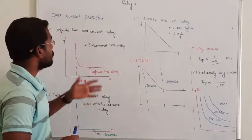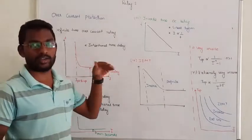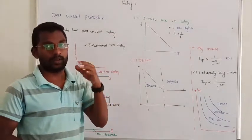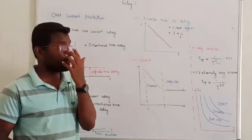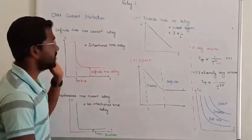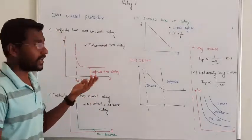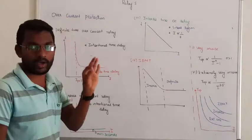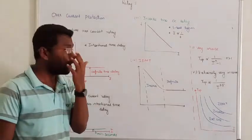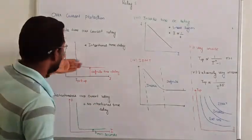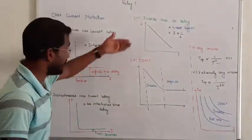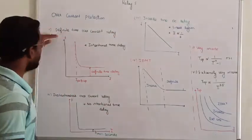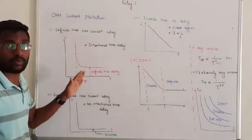Hello guys. So next protection is secondary, primary protection. Now we will talk about secondary. First we will talk about overcurrent protection. We saw a classification, so let us see each and every relay one by one.